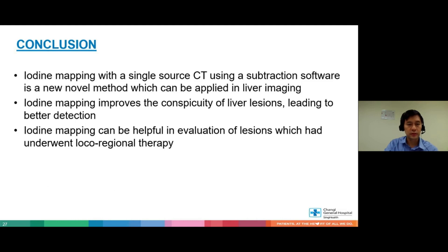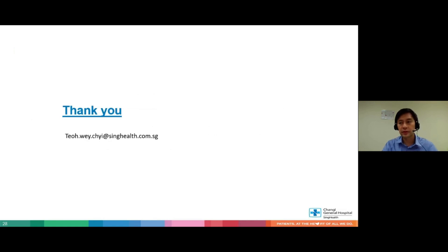In conclusion, iodine mapping with a single source CT using subtraction software is a novel method which can be applied in liver imaging. Iodine mapping improves the conspicuity of liver lesions leading to better detection, and we certainly think that iodine mapping can be helpful in evaluation of lesions which have undergone local regional therapy. Thank you very much.